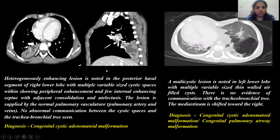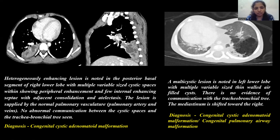The following images are contrast-enhanced CT images, axial and sagittal, showing a heterogeneously enhancing lesion in the posterior basal segment of the right lower lobe, with multiple variable-size cystic spaces within, showing peripheral enhancement and few internal enhancing septae, with adjacent consolidation and atelectasis. The lesion is supplied by normal pulmonary vasculature. No abnormal communication is seen between the cystic spaces and the tracheobronchial tree. Diagnosis of congenital cystic adenomatoid malformation was made.